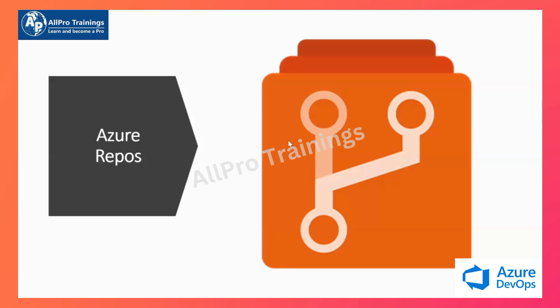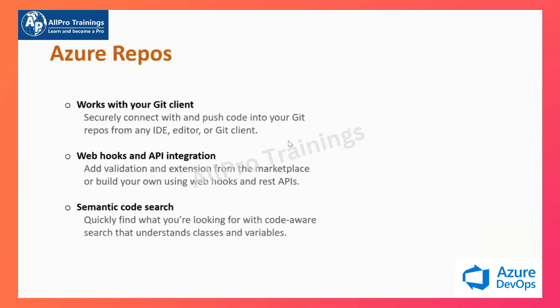One of the best things is that it is always integratable with any publicly or privately available Git or SVN machines. For example, if you have a project in your private GitLab or private GitHub repository, you can still connect to that repository using Azure Repos, do your cloning, and you can also integrate it with hooks for pipelines — like Jenkins, Bamboo, GitLab, or Travis — you can link all of it here.